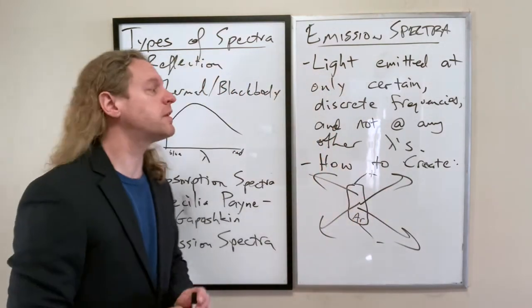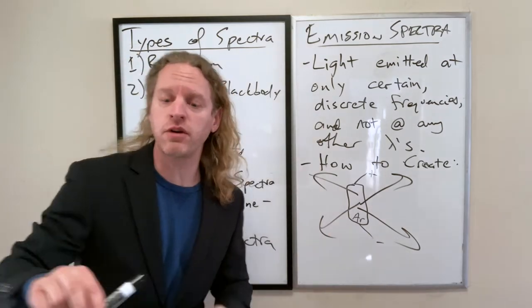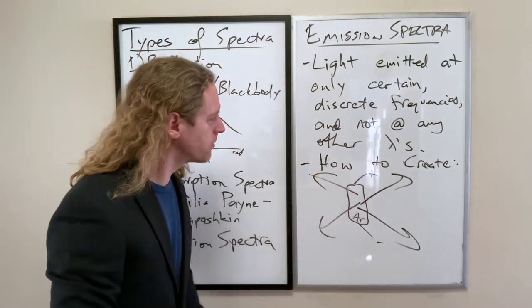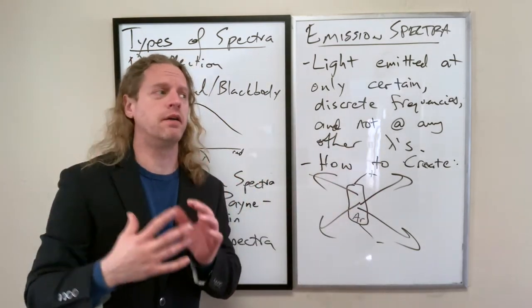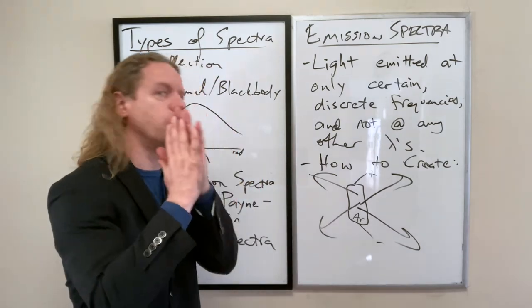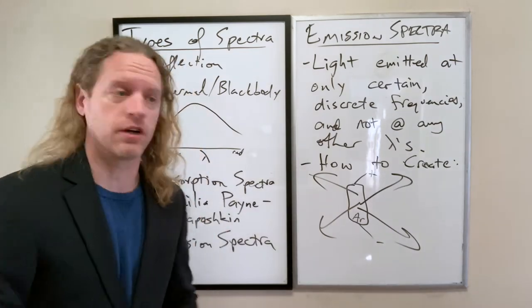So the long and the short of it is, in order to create an emission spectrum of a certain element, you electrify it. And in the best possible case, you isolate only that element, so you make a vacuum tube filled with only that gas that you're exploring.